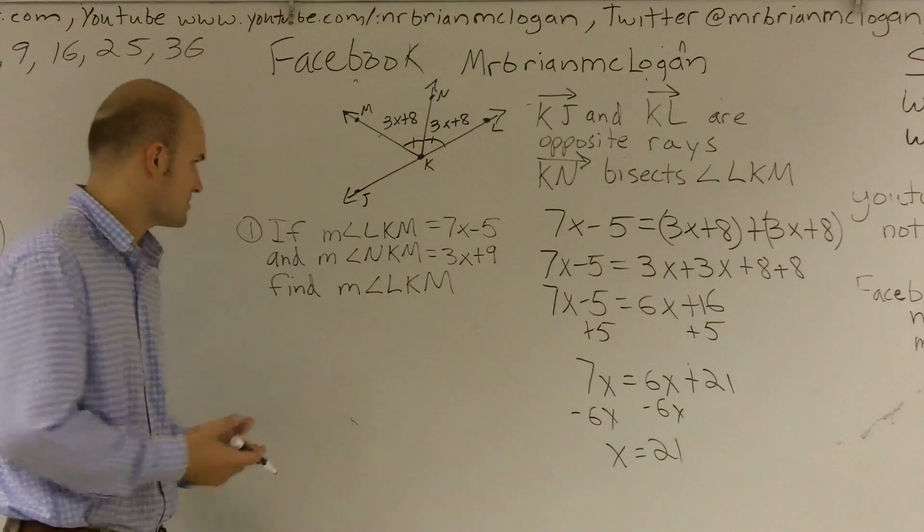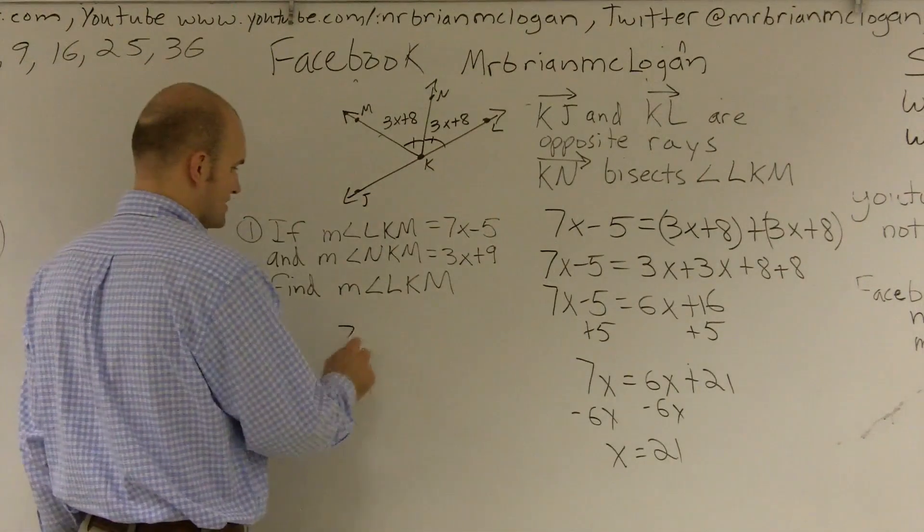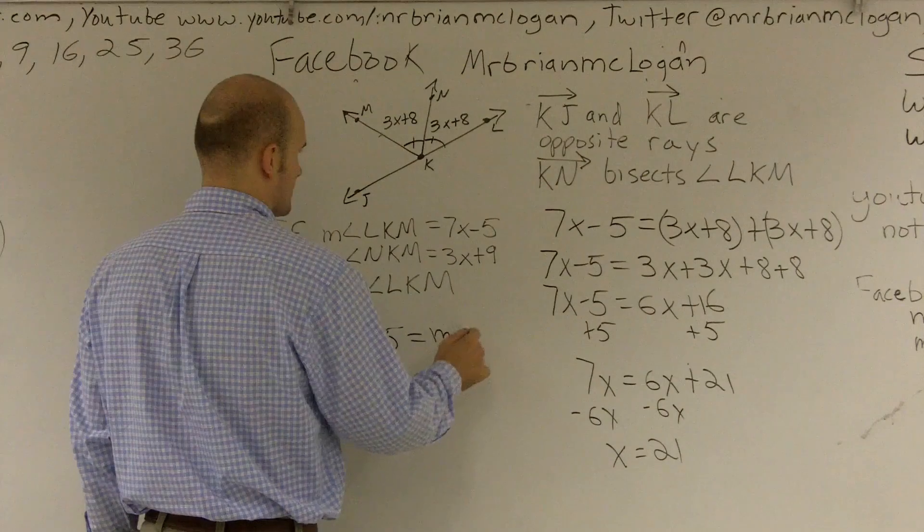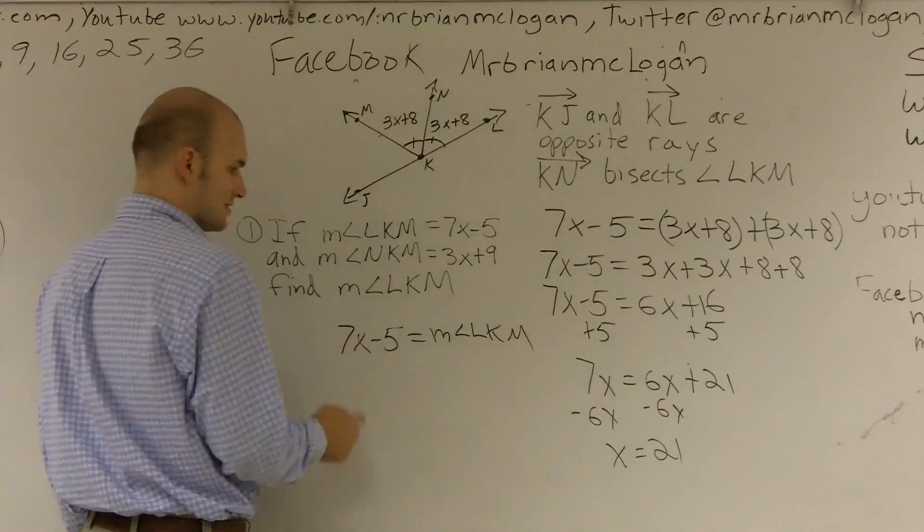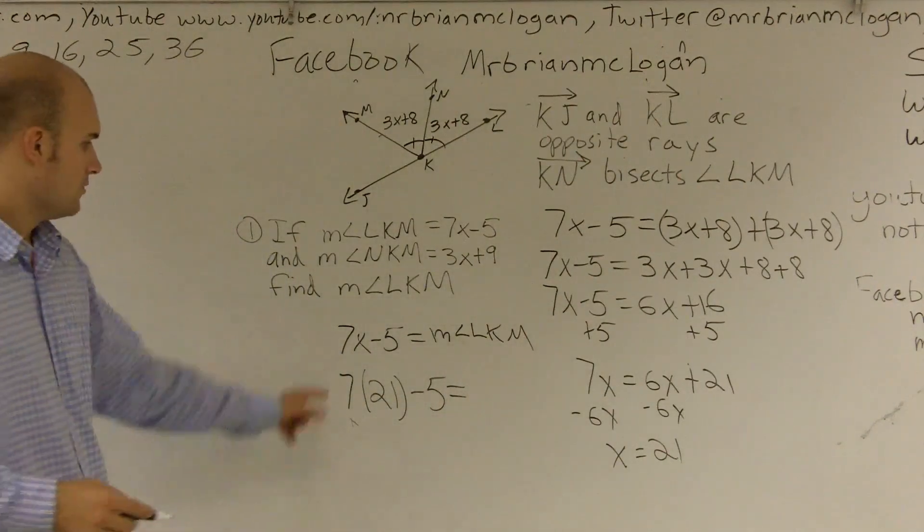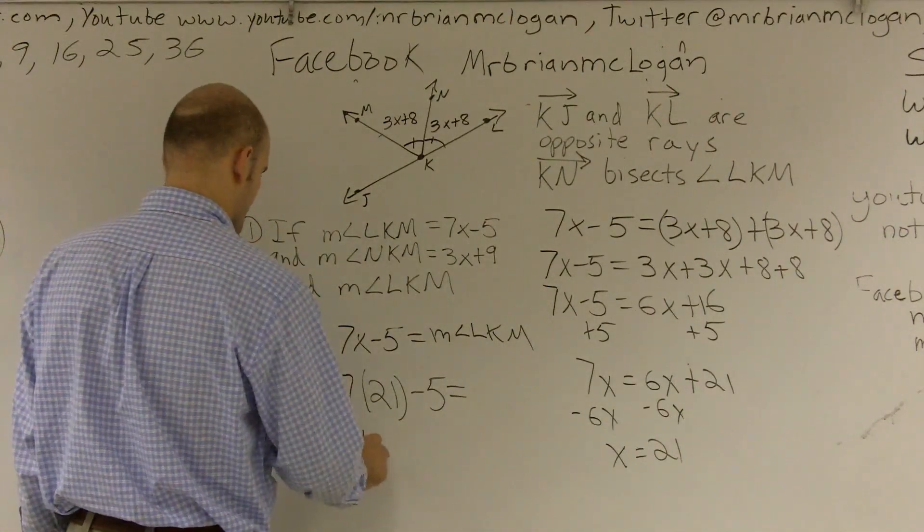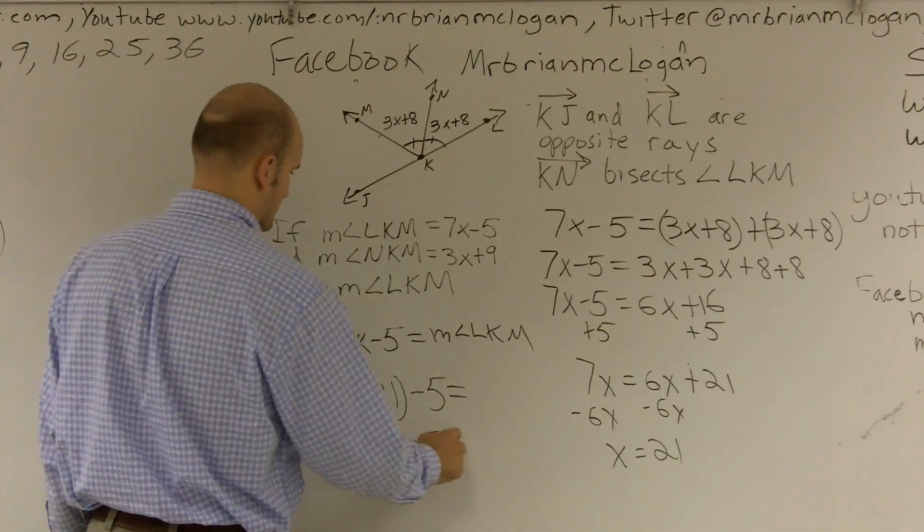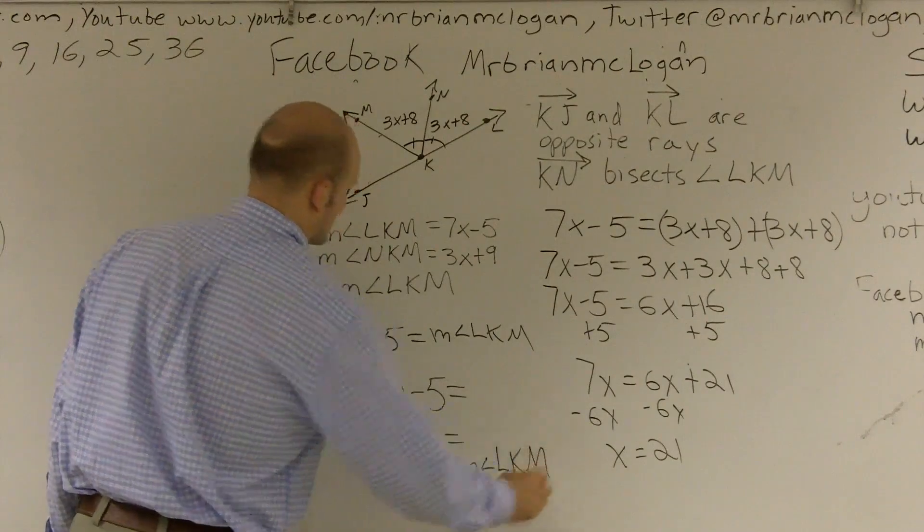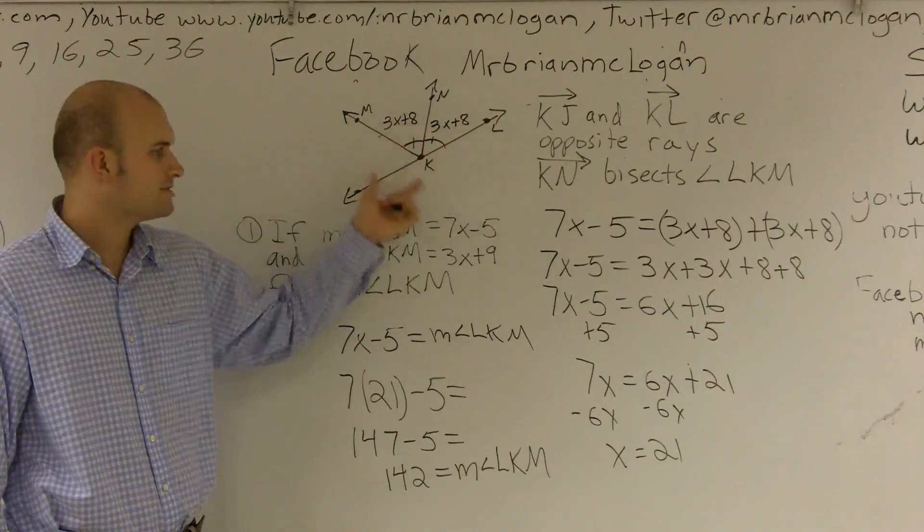So therefore, I know now what X equals, and it says find the measure of LKM. So I know that LKM is 7X minus 5, so I can now write 7X minus 5 is equal to, I'm sorry, is equal to the measure of angle LKM. Well, I know what X equals now, which is 21. All right, well, 7 times 21 is going to be 147, and that minus 5 equals 142 equals the measure of angle LKM. All right, so that's how you use your bisecting term to go and help you solve those problems.